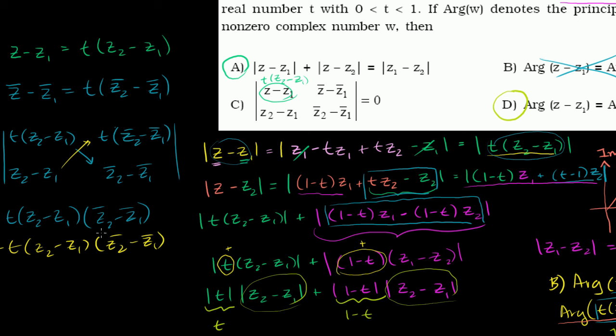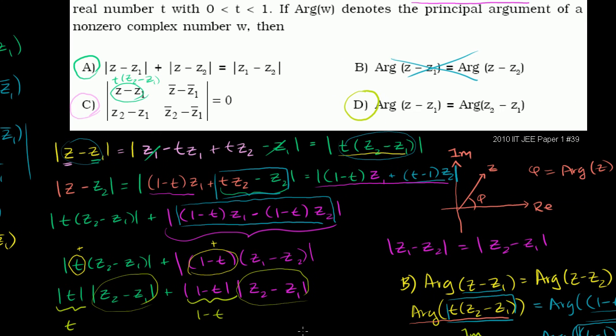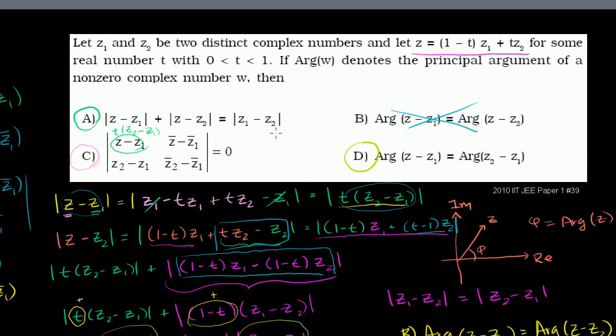Now this is exactly equal to this. These things are obviously going to cancel out. And we're clearly going to get 0. So c is also true. So the correct answers to this original problem, the correct answers were a, c, and d.